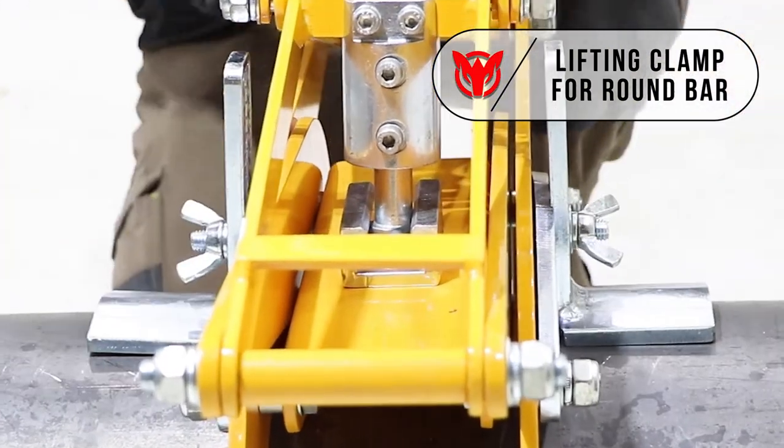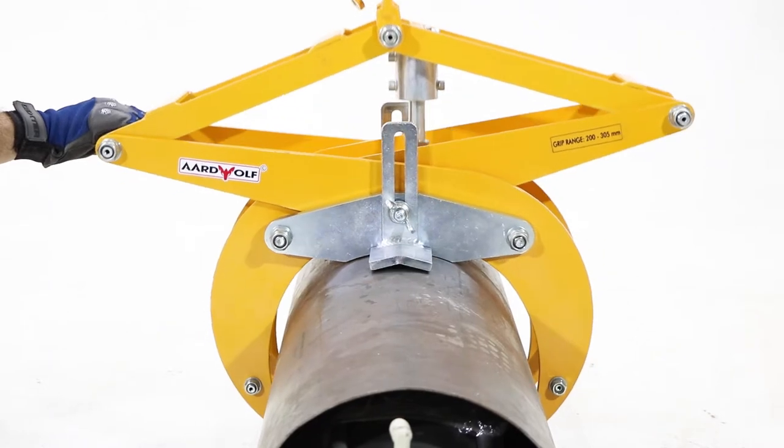Clamp lifter for round bar. ArtWolf BL305 is designed for clamping and lifting steel pipes and tubes.